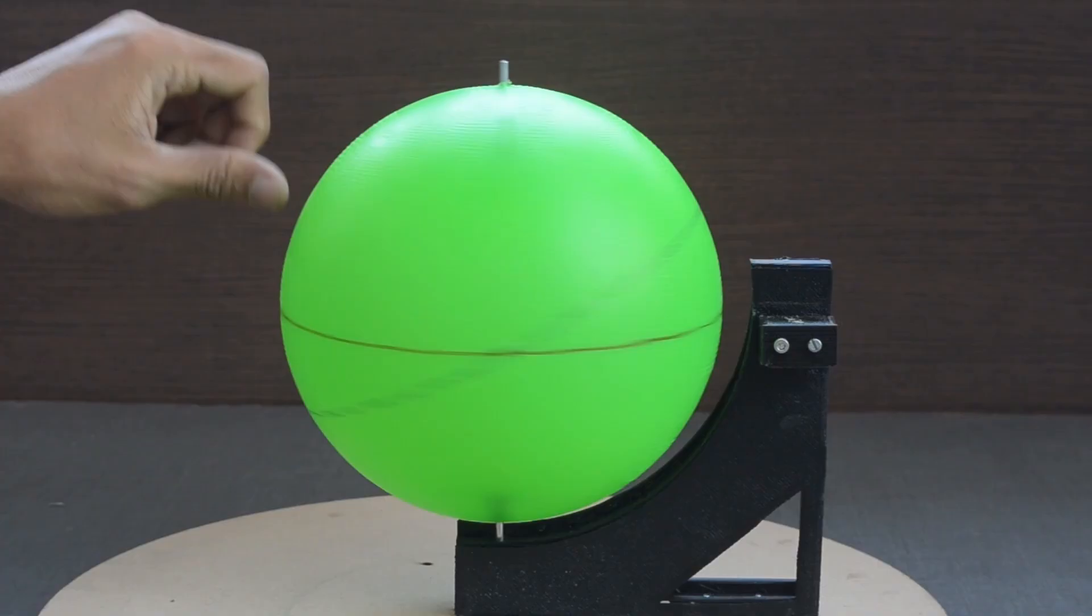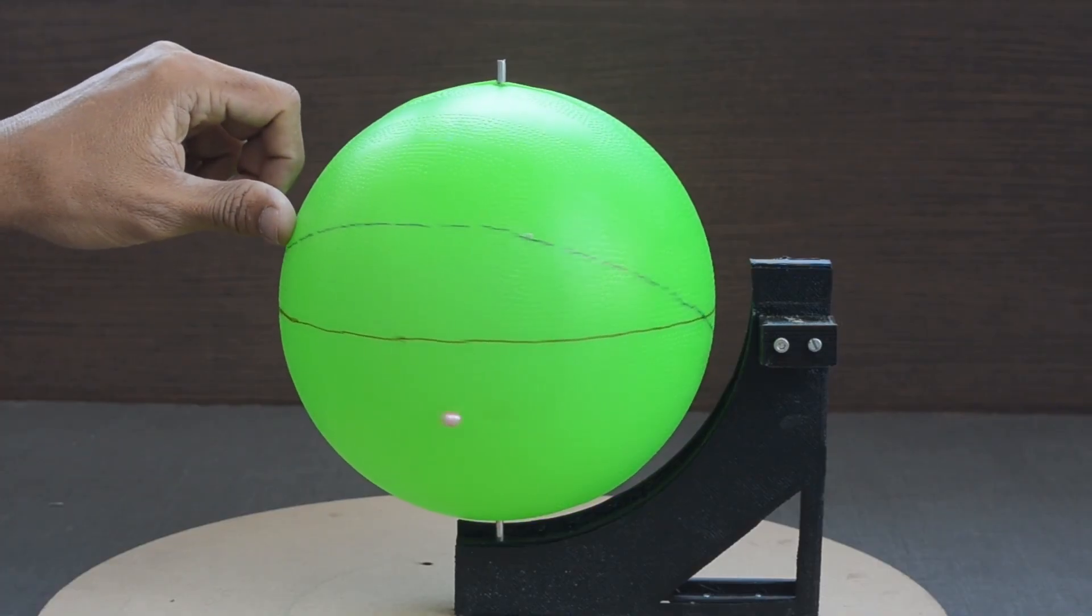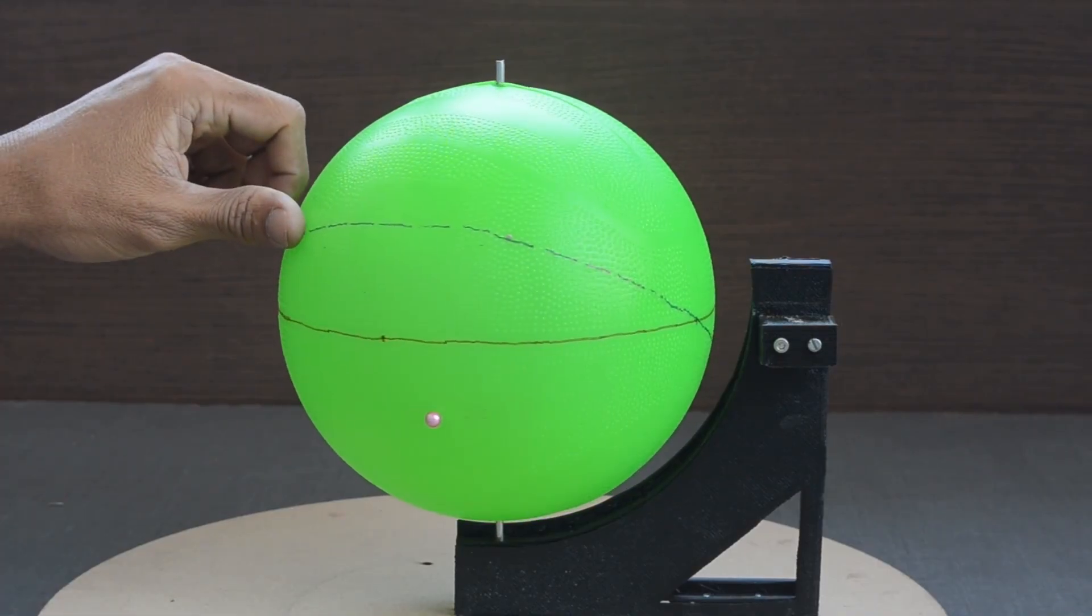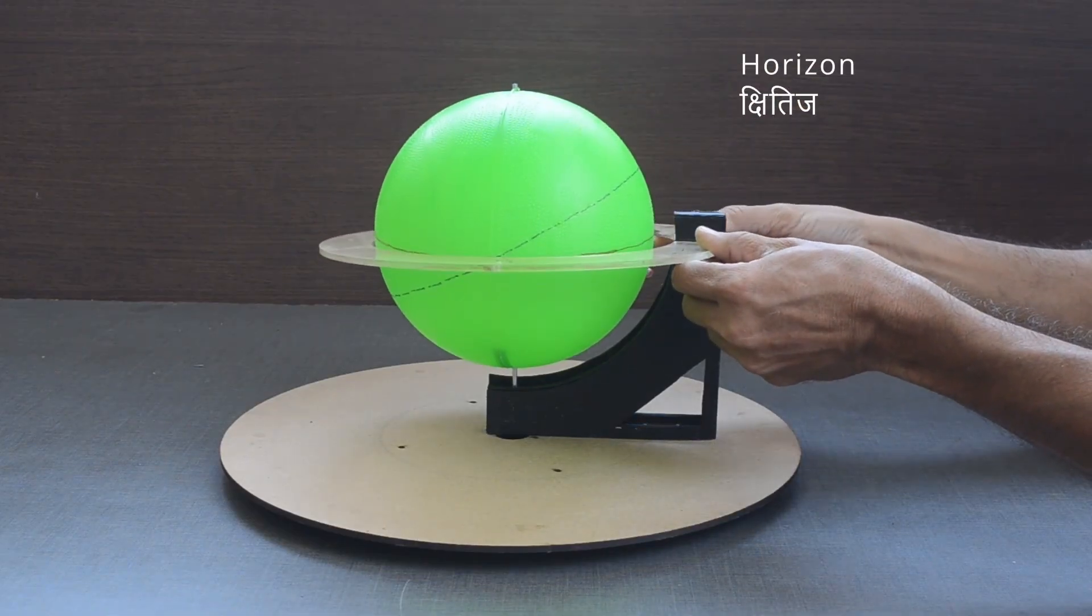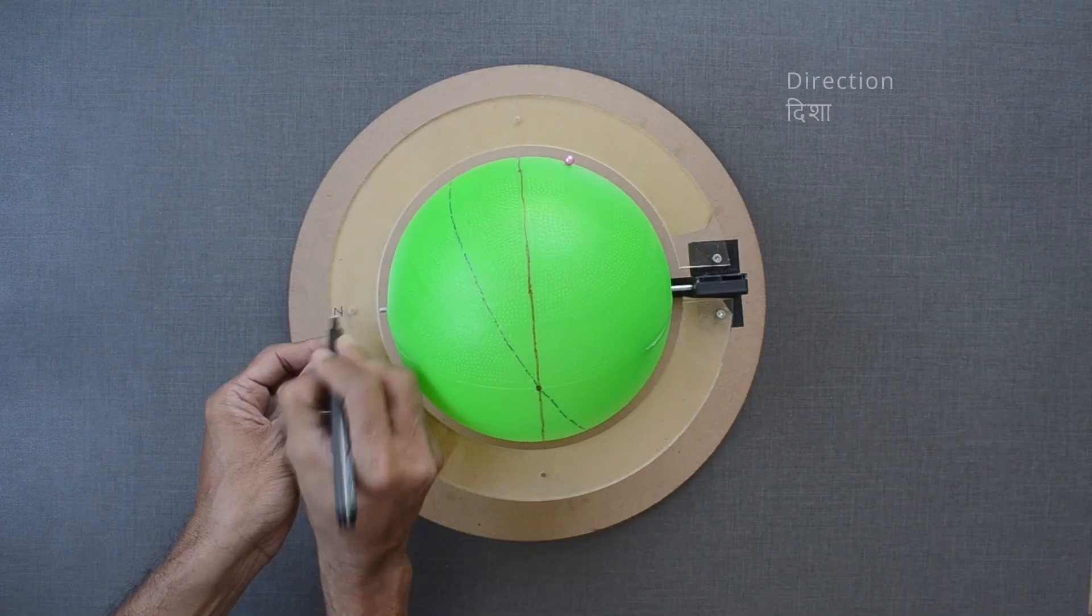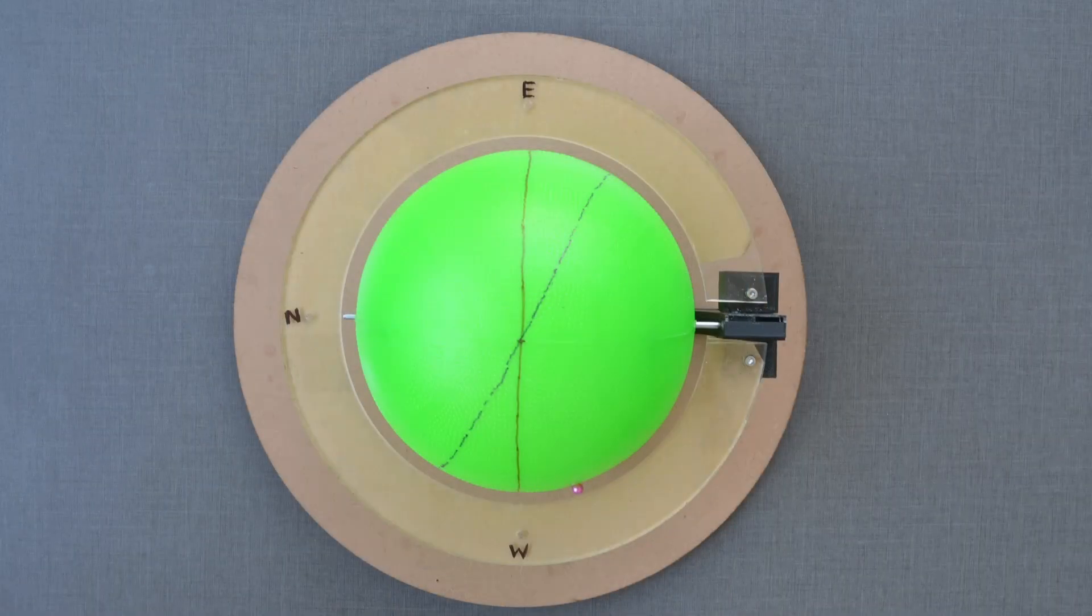Rotating the sky once simulates one day or approximately 24 hours. Let us fix this small ring around a celestial sphere. This ring will represent our local horizon. Cardinal directions can be marked on the horizon for reference.